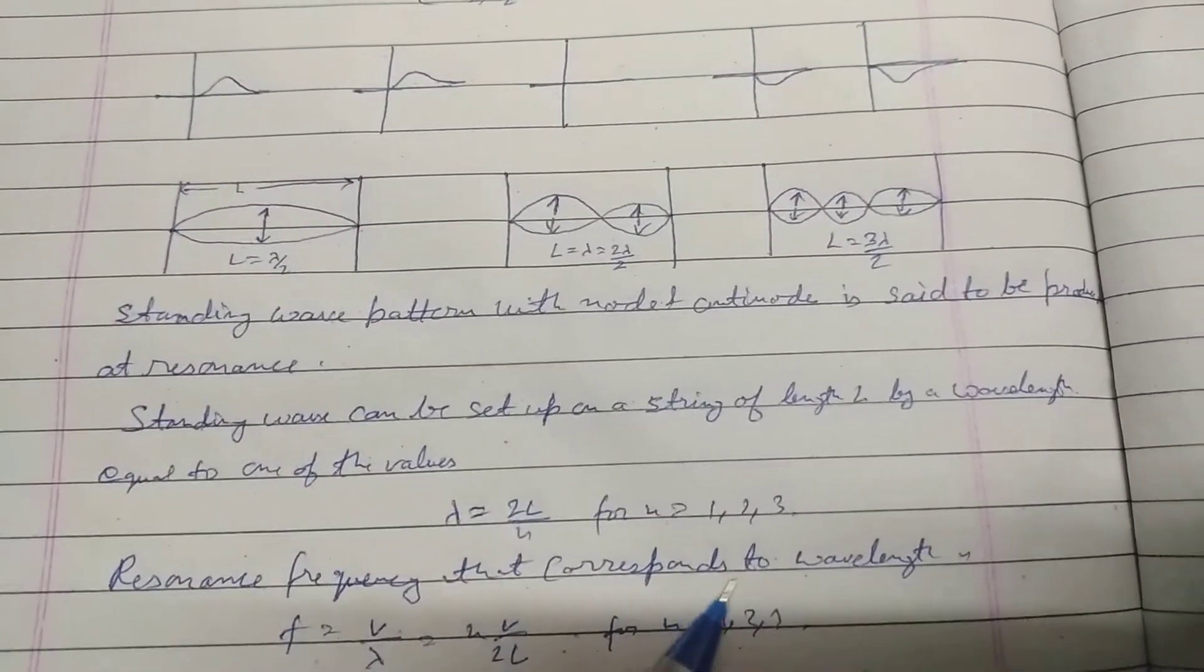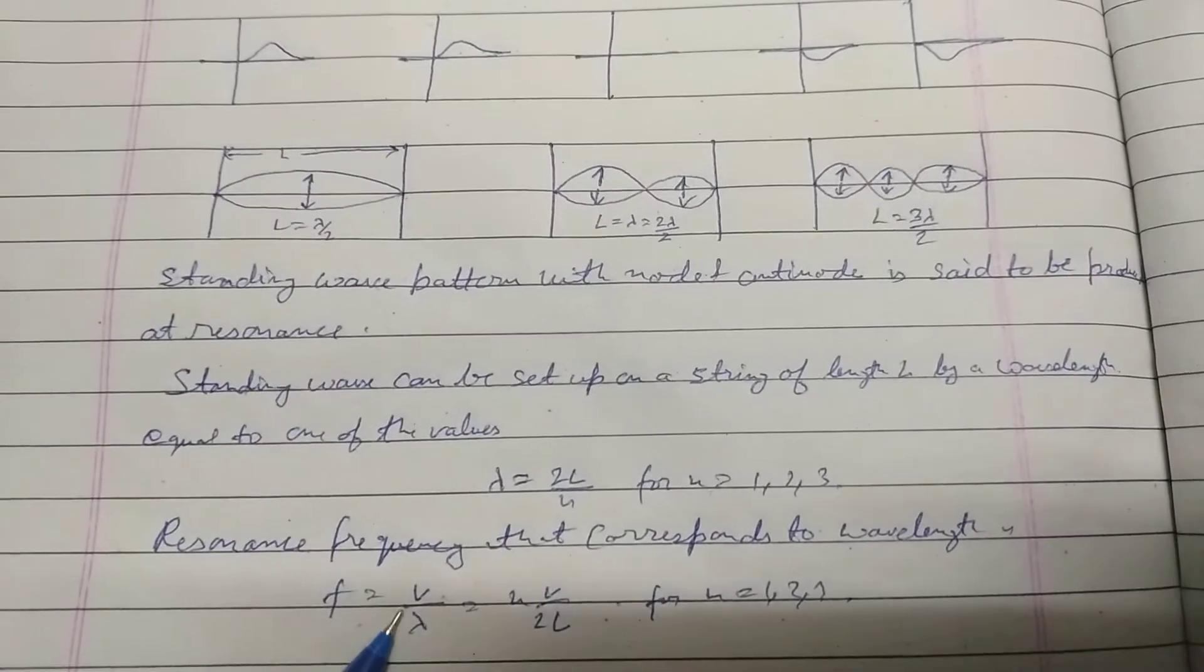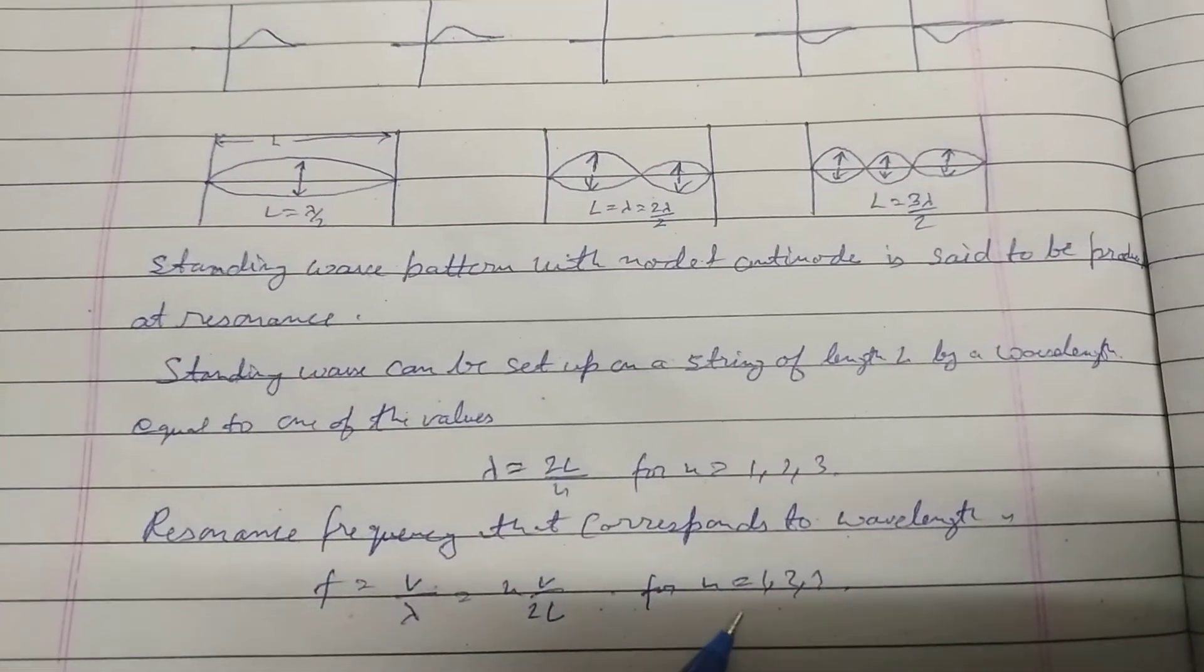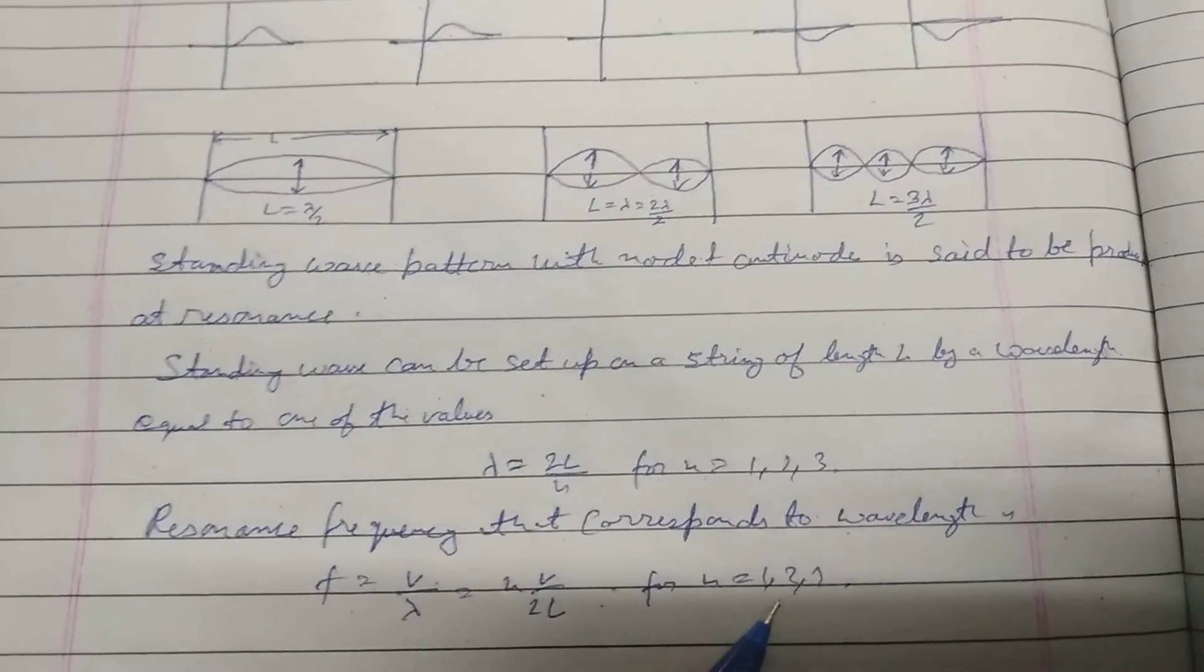Resonance frequency that corresponds to a wavelength f equals v by lambda equals n v by 2L for n equals 1, 2, 3.